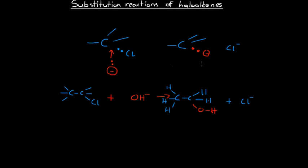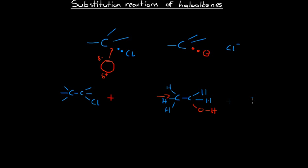Not only can this bond be attacked by a negative ion or anion — the other option is that if we have a polar molecule, that molecule may have a slightly negative end (delta minus) and a delta positive charge at the other end. What can happen is that the negative end of this polar molecule can in fact kick the chlorine out, much the same way as the negative ion did. One example of this is again the production of ethanol.